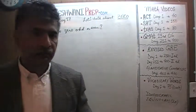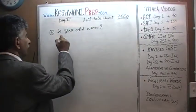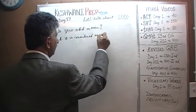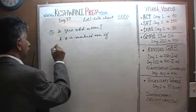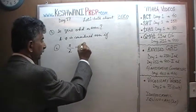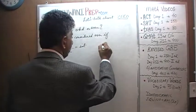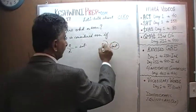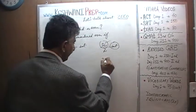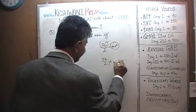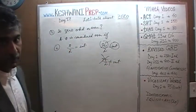Let's first look at the definition of an even number. A number is considered even if you are able to take that number, divide it by two, and end up with an integer. For example, 16 divided by two is eight, which is an integer, and therefore 16 is even. On the other hand, 17 divided by two does not give an integer, and therefore 17 is not an even number.